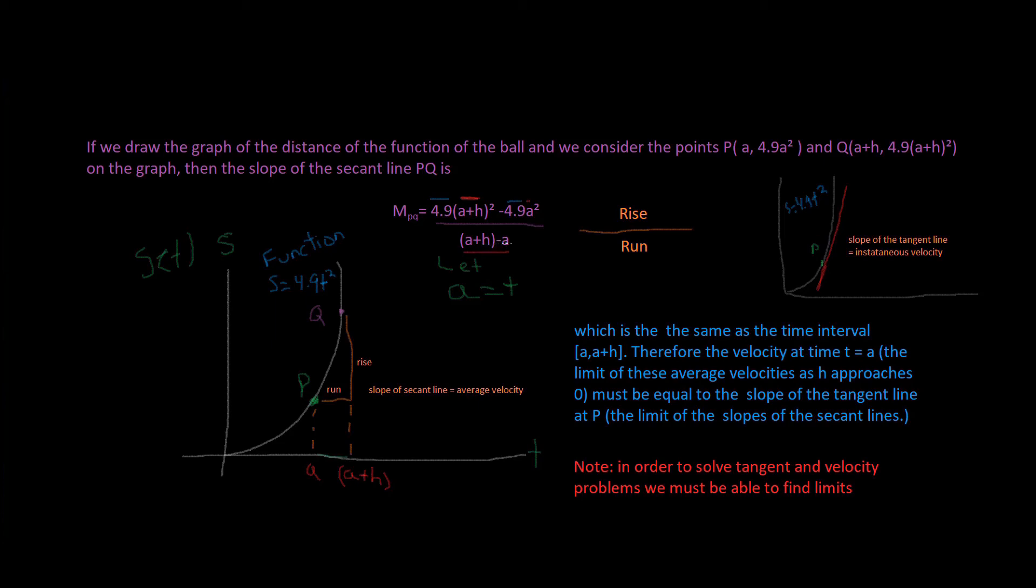So, that's why we have this right here, A plus H minus A. So, what's happening? We're doing the rise over the run. So, A plus H minus A. So, that's going to be in the bottom, because these are our X's. These are our Y's. And it's Q minus P. Q minus P. That's why we have this on top. So, I just wanted to show you that.